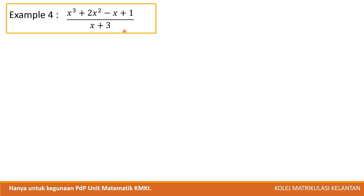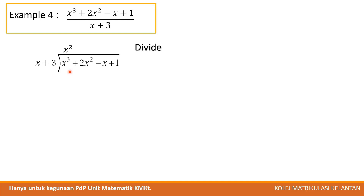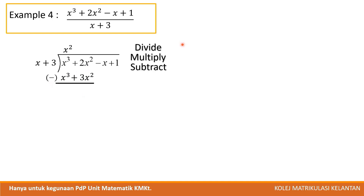For example, we want to divide a polynomial. Write it in long division form with the numerator inside and denominator outside. Remember 4 steps. Step 1 — Divide: divide x³ by x to get x². Step 2 — Multiply: multiply x² by x to get x³, and x² by 3 to get 3x². Step 3 — Subtract: x³ minus x³ gives 0, and 2x² minus 3x² gives -x².